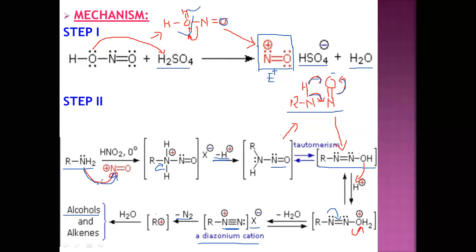So after tautomerization in acidic medium, we get the diazonium cation, N2 gas is liberated, and we get the alkyl group — this is the reaction of nitrous acid with aliphatic primary amine to give alcohol.